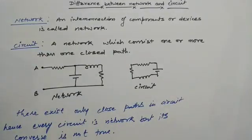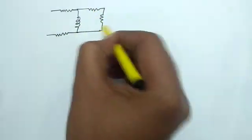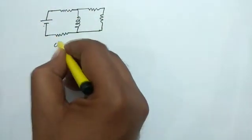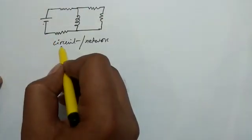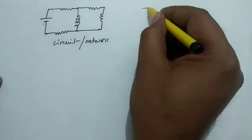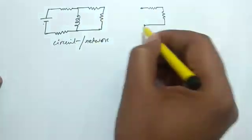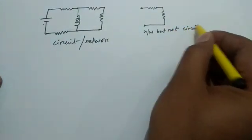Let's take some more examples. This interconnection is a circuit. It may also be a network, because network is a general term — any interconnection which may or may not consist of a closed path may be a network. But in the case of a circuit, there must exist a closed path. This one is a network, but not a circuit.